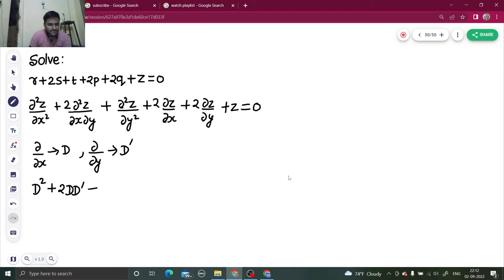Then we have 2D, 2D dash, plus 1, and z equals to zero. This is a good form. Now this is not in terms of factors, so first we have to make factors from this.